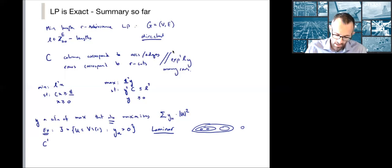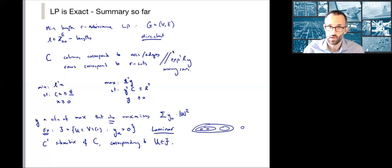We took C dash to be the submatrix of C corresponding to just the elements in this laminar family. We saw in the previous lecture that by removing those rows, we have fewer constraints in the primal. If you have fewer constraints, that means the min is going to go down. That means that therefore the max is going to go down when you have fewer rows.